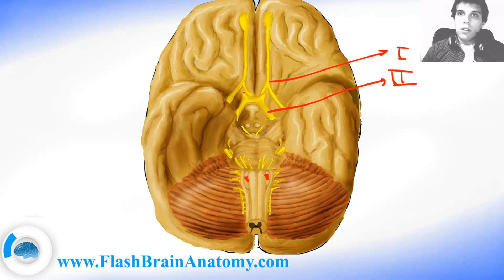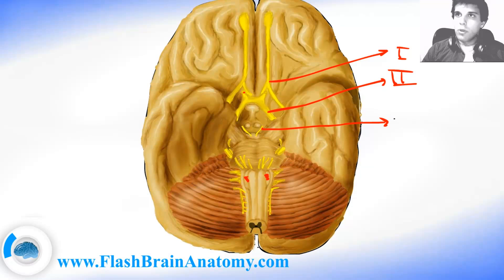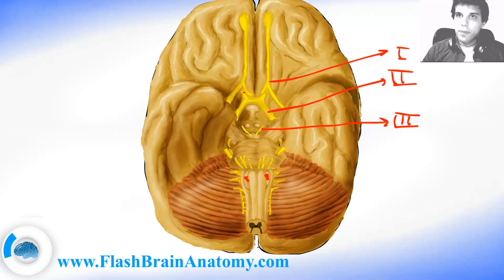Cranial nerve number 3 is the oculomotor nerve. It innervates the superior oblique muscle of the eye.